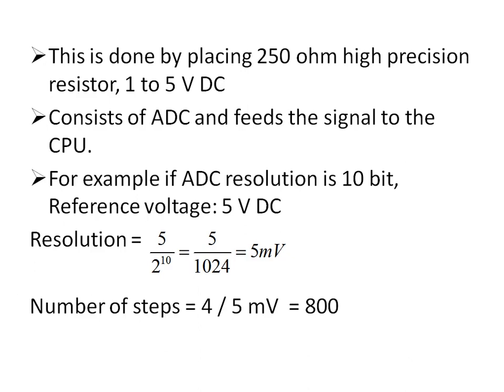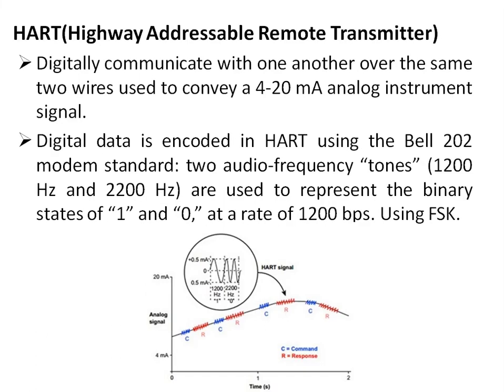For example, if the ADC resolution is 10-bit and the ADC reference voltage is 5 volts, then the resolution of that ADC is 5 millivolts. In the 1 to 5 volts DC range, corresponding to 4 to 20 milliampere, this gives 800 steps.